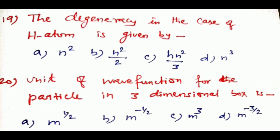Unit of wave function for the particle in three-dimensional box: option a: m^(1/2), option b: m^(−1/2), option c: m³, option d: m^(−3/2). The correct answer is m^(−3/2), so option d is the correct answer. Thank you friends.